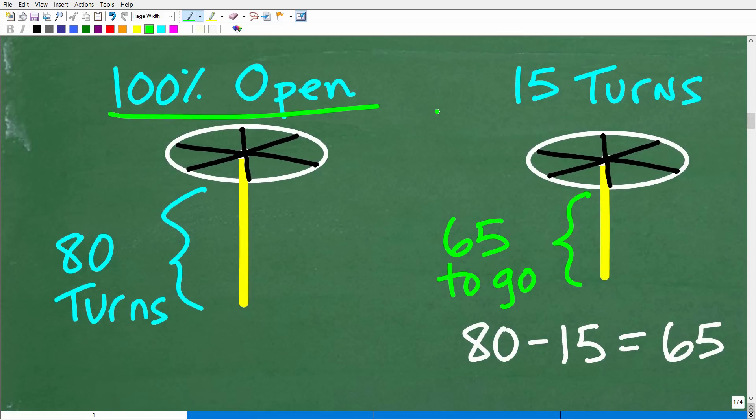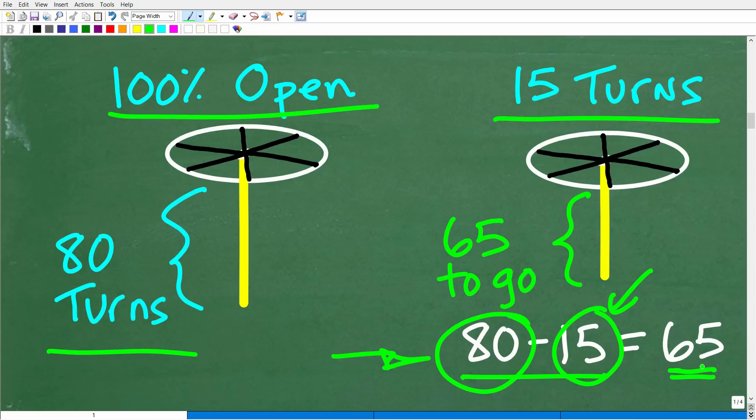So again, to close the valve 100%, this valve is 100% open, we have to turn the valve 80 turns, right? So I already turned the valve 15 turns. So I have 65 more turns to go to shut this valve, right? Because 80 minus 15, 15 turns is what I already did, 80 turns is what's required to shut the valve. Well, that means I have 65 turns more to go to do the job or to complete the job.